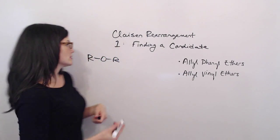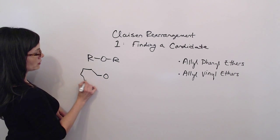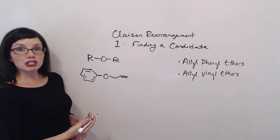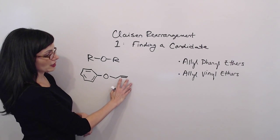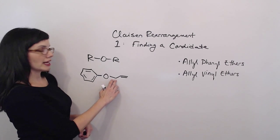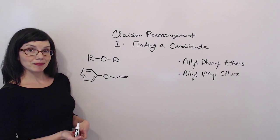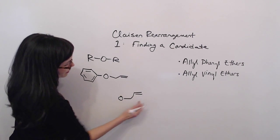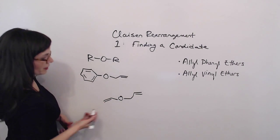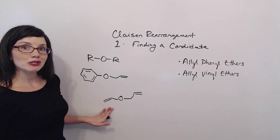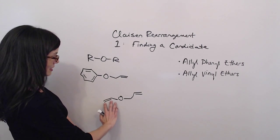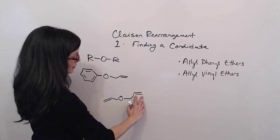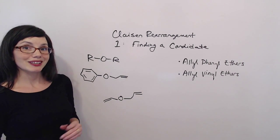Allyl phenyl ethers have an oxygen between a phenyl group and an allyl group. And what's special about an allyl group is that it has a carbon-carbon double bond separated from the O by an sp3 carbon. An allyl vinyl ether has that same allyl group and a vinyl group on the other side. And the allyl and vinyl groups can look different from one another because the vinyl group has the carbon-carbon double bond directly bound to the O, where the allyl group is separated from the O by an sp3 carbon.